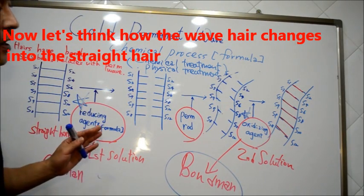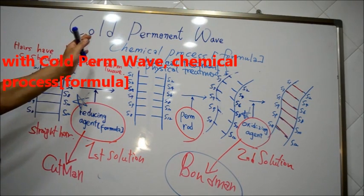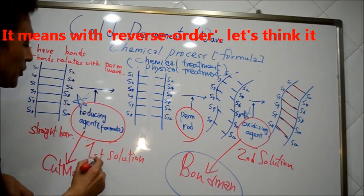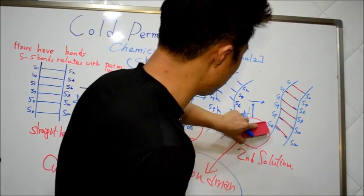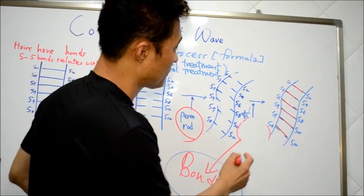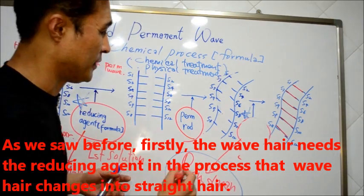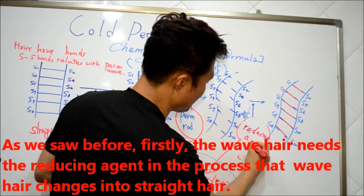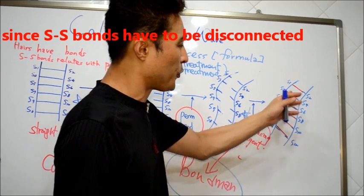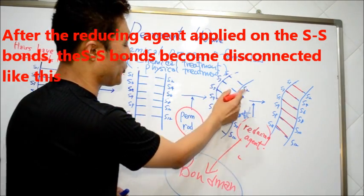Now, let's think how wavy hair changes into straight hair, or the reverse process. It means reverse order. Since S-S bonds have to be disconnected after reducing agent is applied, S-S bonds are disconnected like this.